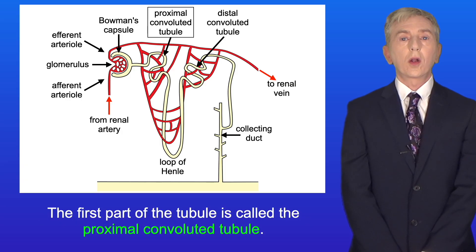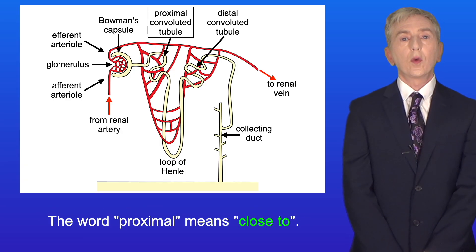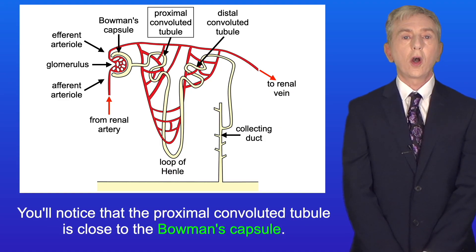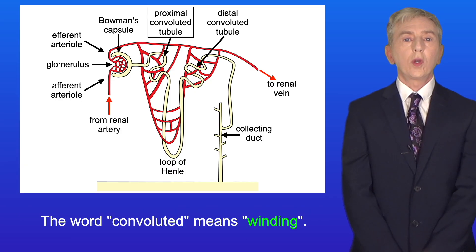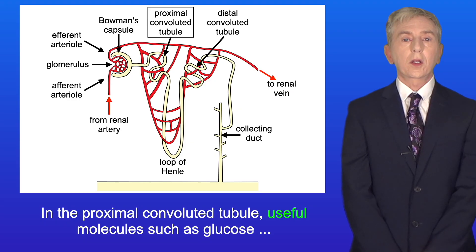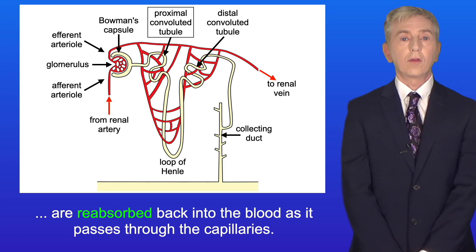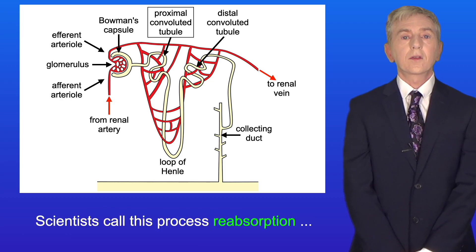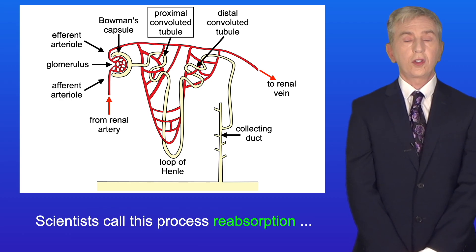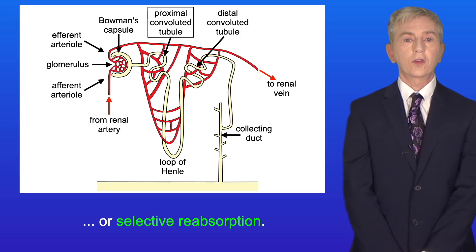The first part of the tubule is called the proximal convoluted tubule. The word proximal means close to, and you'll notice that the proximal convoluted tubule is close to the Bowman's capsule. The word convoluted means winding. In the proximal convoluted tubule, useful molecules such as glucose are reabsorbed back into the blood as it passes through the capillaries — scientists call this process reabsorption, or selective reabsorption.